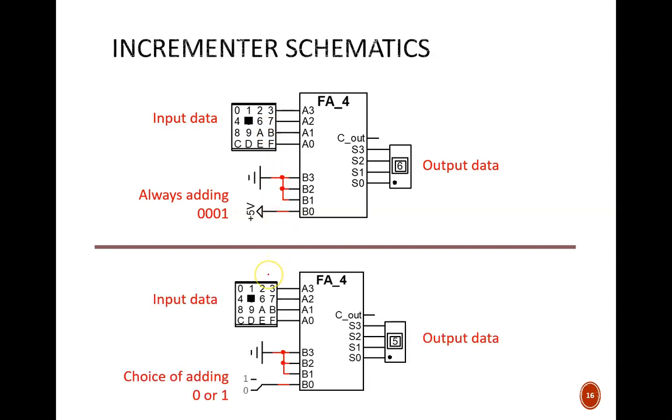In some cases, it would be nice to have flexibility, a choice of whether to increment or leave the number the same. This can easily be done with a switch connected to B0. When switched low, the circuit adds 0000, or no change.